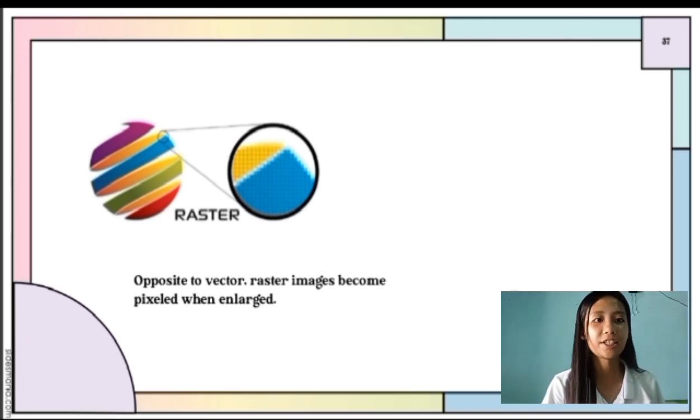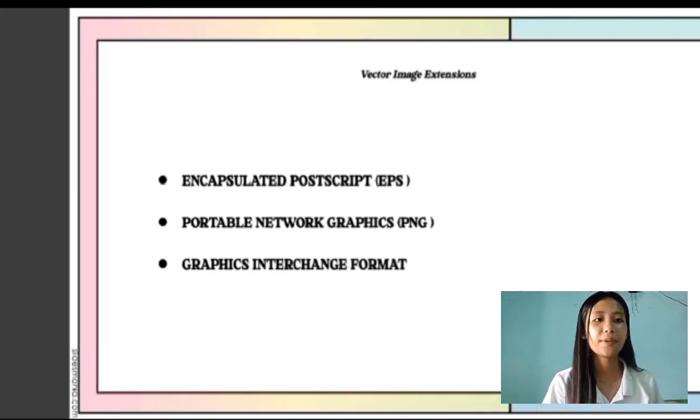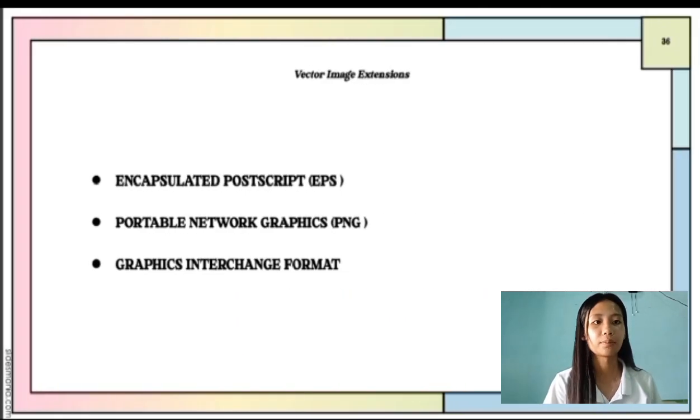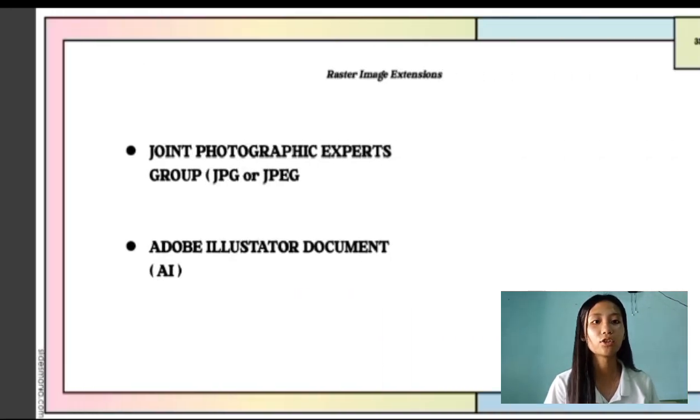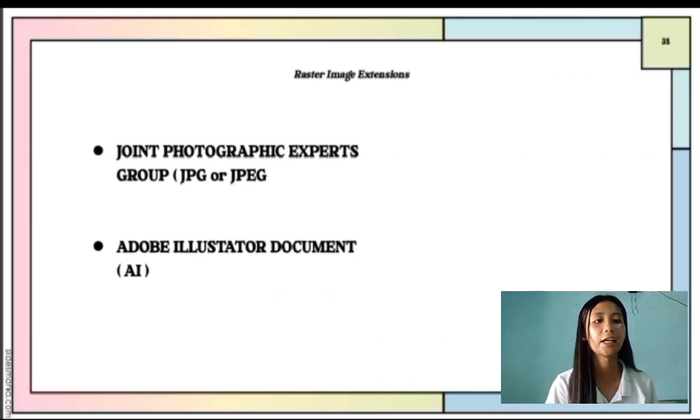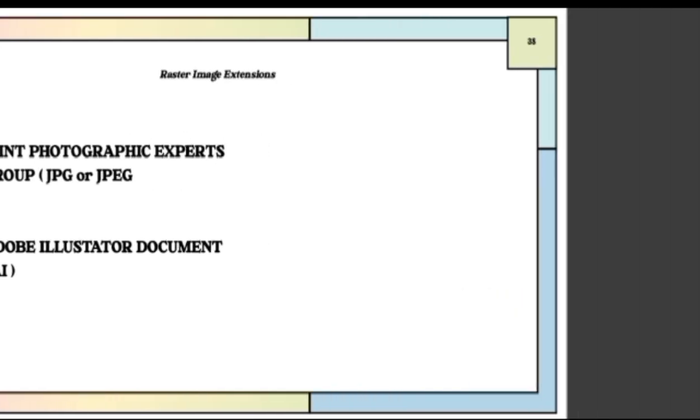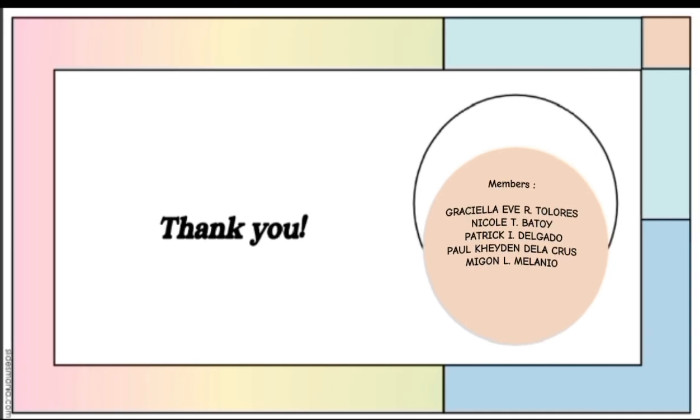Here are the vector image file extensions. EPS, Encapsulated PostScript. This vector format is designed to produce high resolution graphics for print. The second one is Adobe Illustrator document, or AI. This is the most preferable and commonly used image file type for designs.